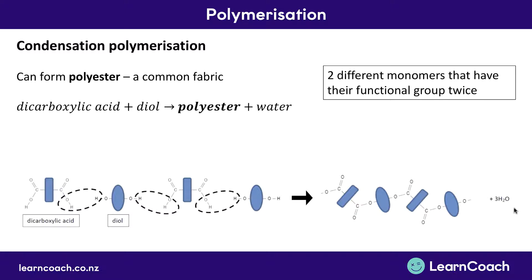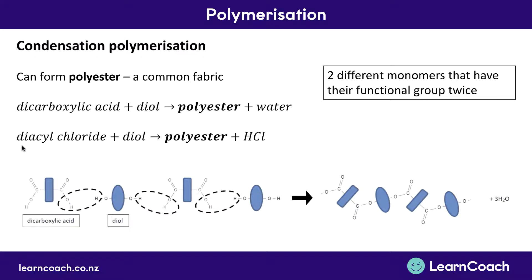You're getting lots of ester bonds joined together to make one long chain, plus the water which is condensed out. We could also do this with a diacyl chloride — an acyl chloride with two ends — and a diol. You'd still get polyester, but instead of an OH and an H being condensed out to make water, you'd have an H and a Cl condensed out to make HCl. So that's how polyester, a common fabric, is created.